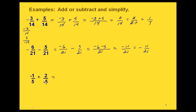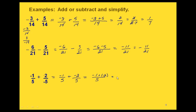Finally, in this one, notice that our second fraction has the negative in the denominator with the 5. That makes it look like these aren't like fractions because they don't have the same denominator. But remember, we can move that negative from the denominator either out in front of the fraction or up to the numerator. Let's move it up to the numerator with the 2. Now it looks like we have like fractions because our denominators are the same. So our new denominator is 5, then on the top we have negative 1 plus negative 2, giving us negative 3 over 5. For our final answer, let's write that negative out in front: negative 3 fifths.